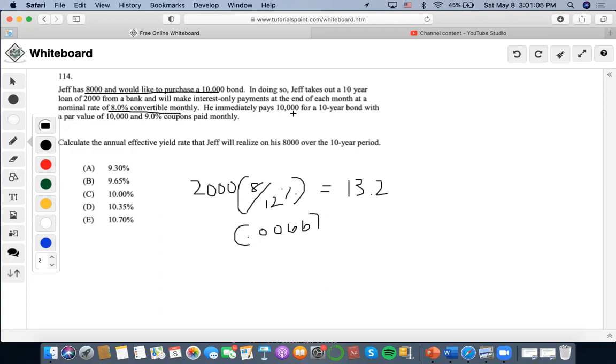Now, afterwards, he immediately pays $10,000 for a 10-year bond with a par value of $10,000 and 9% coupons paid monthly. So that means that we're going to take the $10,000 with the par value of $10,000 and on top of that 9% coupons paid monthly. So not only does he pay interest in this scenario, but he also pays coupons on here too. So 9 divided by 12 is 0.75. So it would be 0.0075 times 10,000, which is going to be 75.